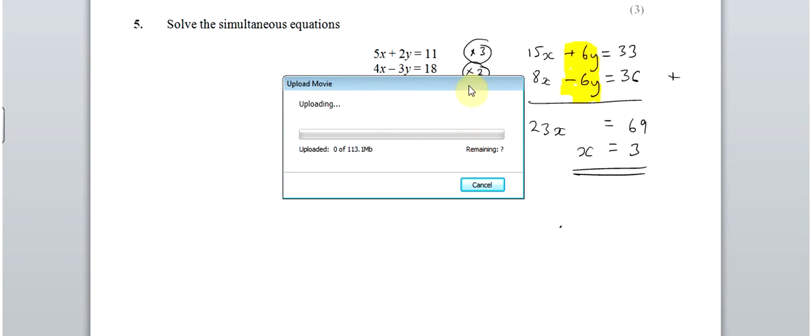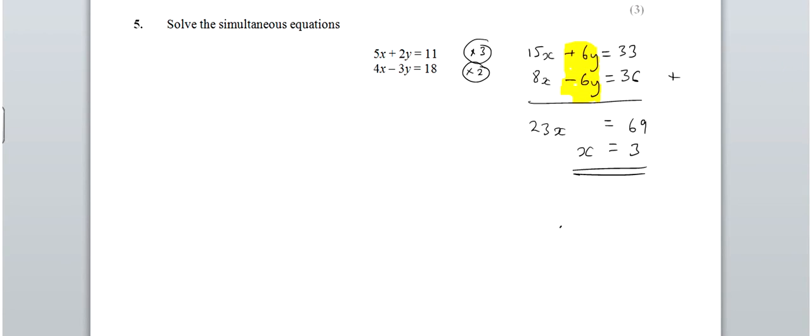Now, pardon me. Let's get rid of that. Let's put our substitute x equals 3 into. And we can pick either of them. I'm going to do it to 5x plus 2y equals 11. So 5 times 3 plus 2y is equal to 11. Subtract the 15 from the 11. So 2y is equal to negative 4. Which means y is negative 2.